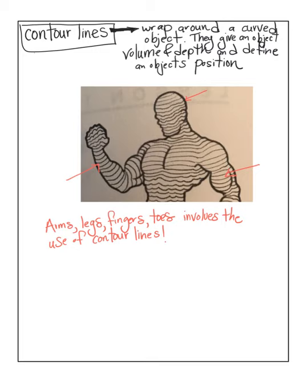Today we're actually going to be drawing a contour tube, and you can extend that contour tube into drawing a contoured-looking person. Again, contour lines are curved lines that wrap around a curved object to give it volume and depth, and to also show if it's in front or behind.